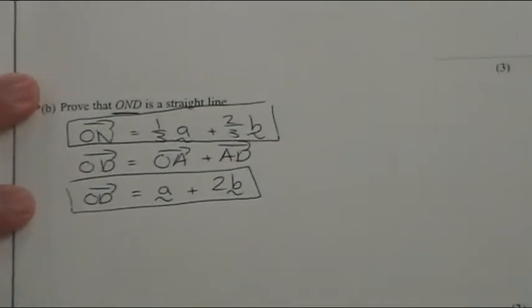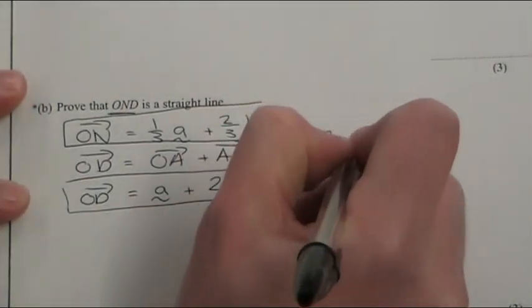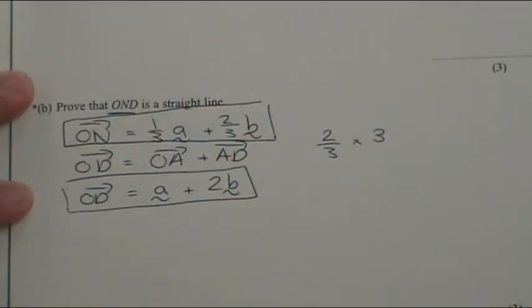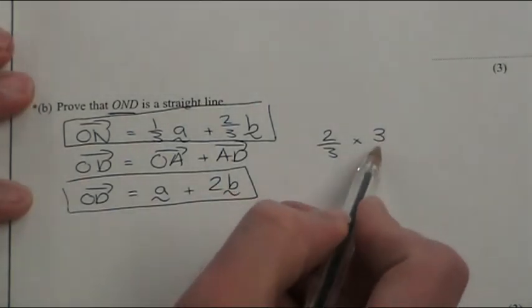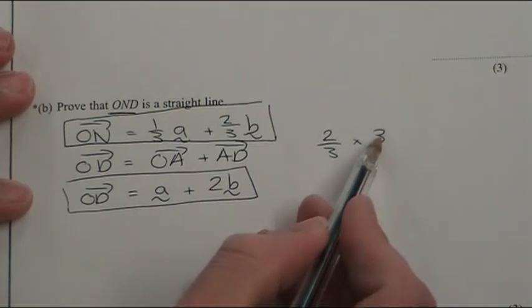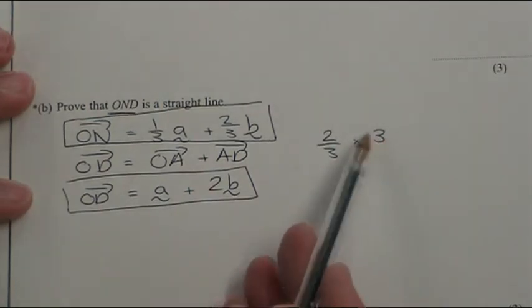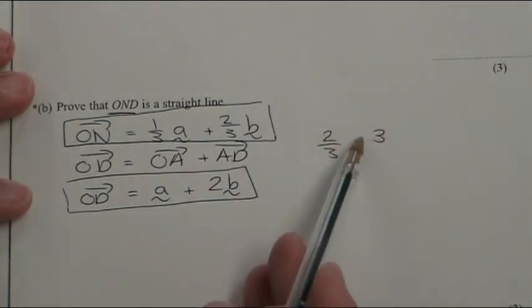And I'll prove it to you. So two thirds times three. Now if you're not too sure with your fractions, you probably should be if you're watching this video, but you can either just remember it's three whole ones times two thirds so you can just times the tops.